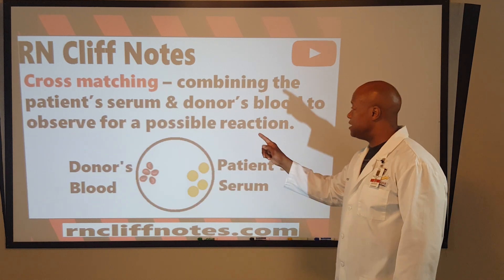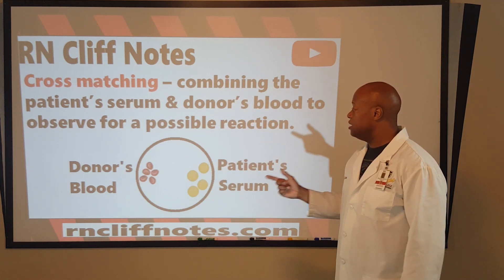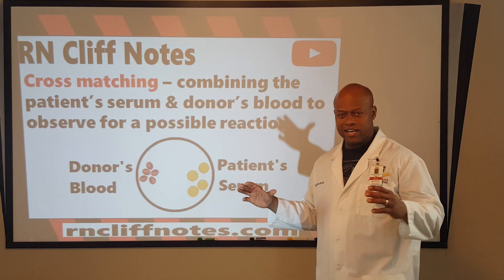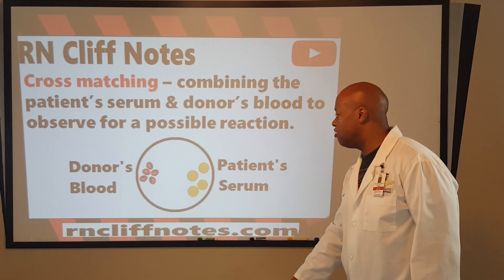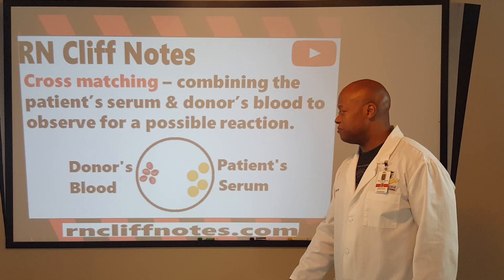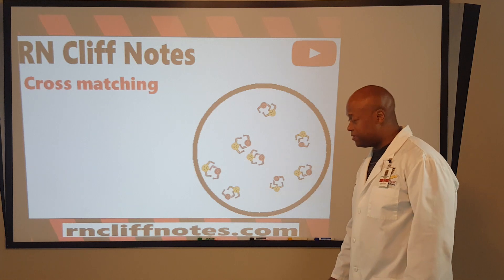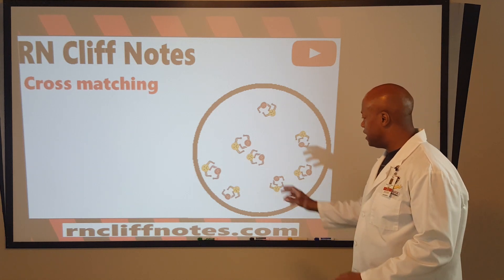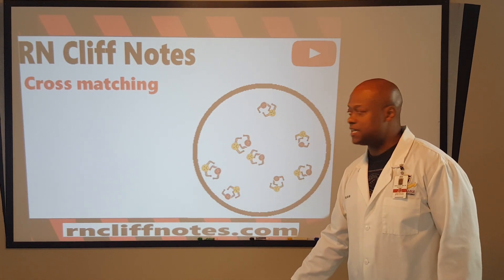Alright, so cross-matching: we are combining the patient's serum with the donor's blood to observe for a possible reaction. We're going to zoom in on that — kind of like a Petri dish — but we know this should be in the test tube. So, donor's blood and patient's serum, with the blood cells there. We've mixed them together in the test tube — and wait, maybe we see little clumps going on here. Let's zoom in and see what's actually happening.